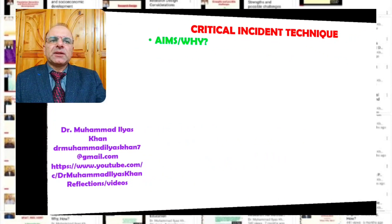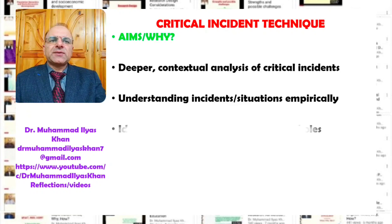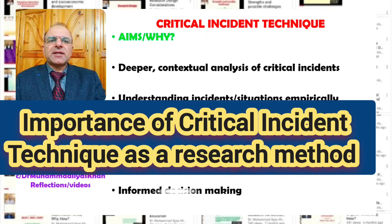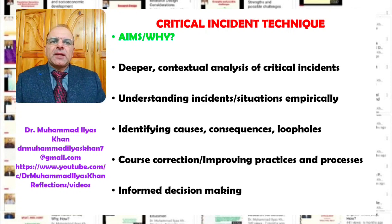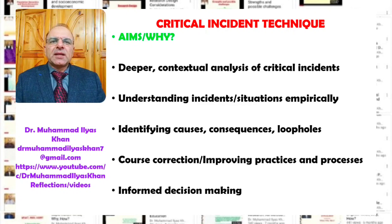Why is critical incident technique used as a research method in social sciences? The first reason is that critical incident techniques help us in deeper, contextual analysis of critical and important incidents or situations. Secondly, it helps us in understanding incidents or situations empirically through the use of empirical methods. Thirdly, it helps us in identifying causes, consequences, and loopholes in certain aspects, especially in professional contexts.